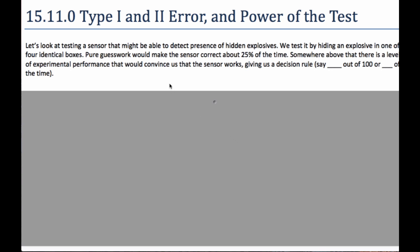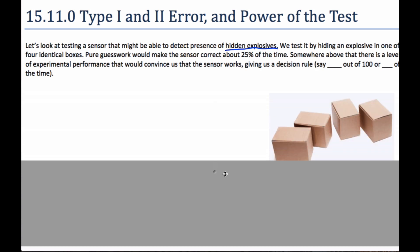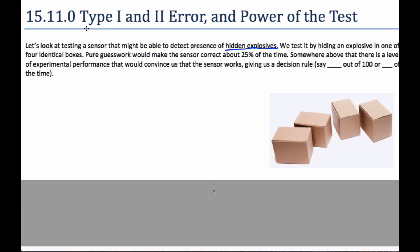Let's look at testing a sensor that can detect hidden explosives. We test it by hiding explosives in one of four identical boxes. In this video we're going to talk about type 1 error, type 2 error, and this thing called power of the test.